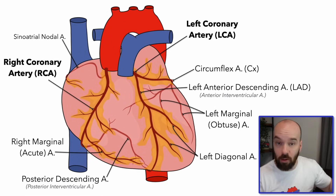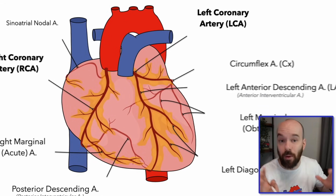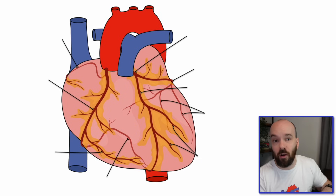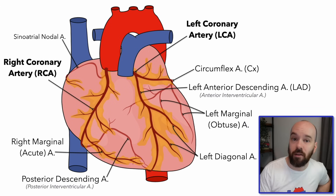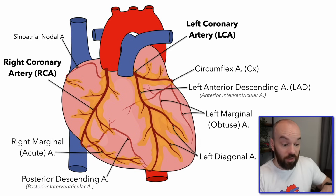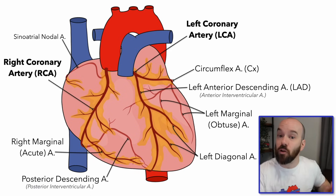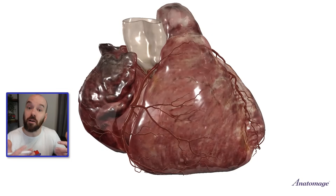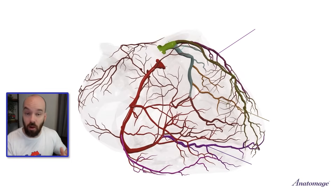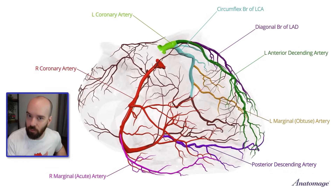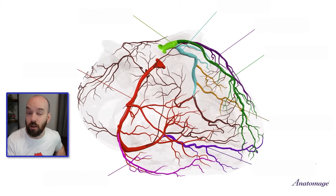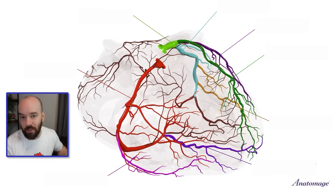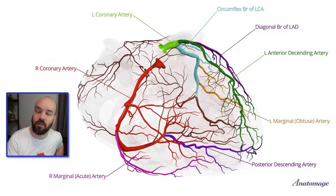Now here's a chance to practice labeling all of these on the heart. Pause the video and see if you can identify all the arteries we learned. Here are those arteries back so you can check how you did. For a final challenge, try it three-dimensionally — if you can identify them on the cadaveric Anatomage image, then you really know them well. The labels are covered — pause the video and try to name all those arteries based on the 3D image, then the labels come back so you can check.